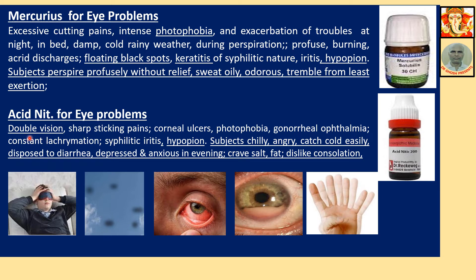Acidum Nitricum for eye troubles: double vision, sharp sticking pain, corneal ulcer, photophobia, gonorrheal ophthalmia, constant lacrimation, syphilitic iritis, hypopion. Subject is chilly, angry, catches cold easily, disposed to diarrhea, depressed and anxious in the evening, craves salt and fat, dislikes consolation.